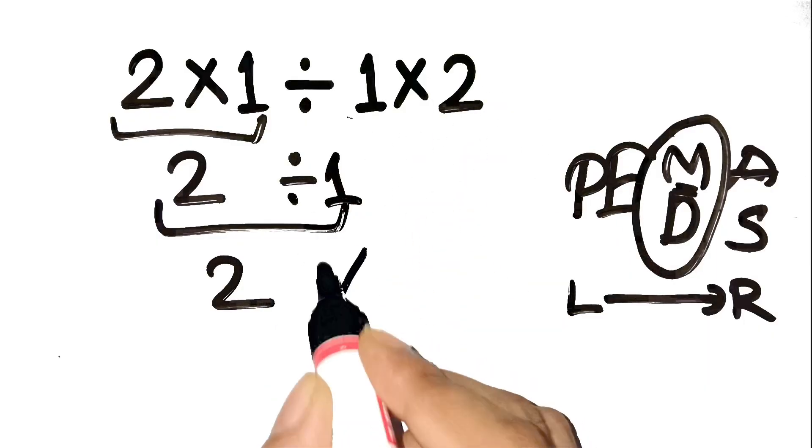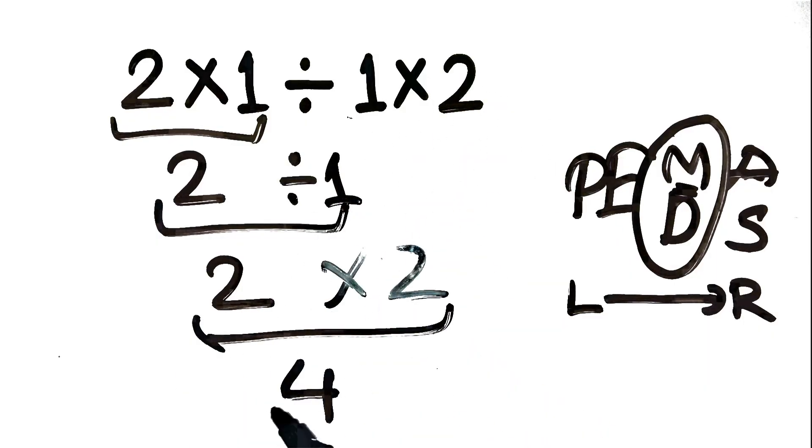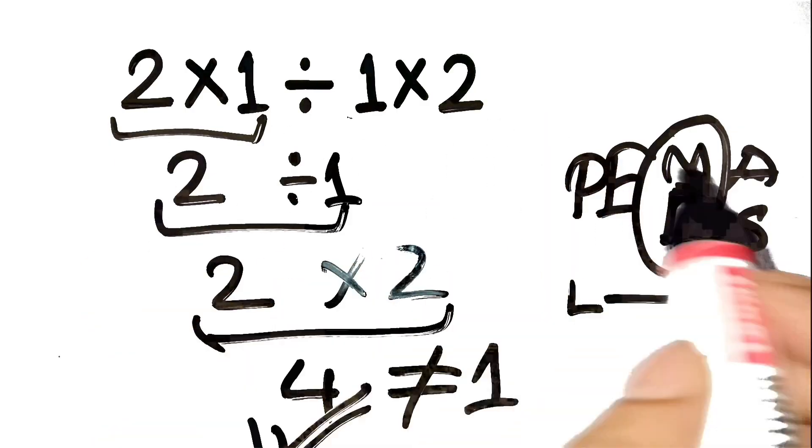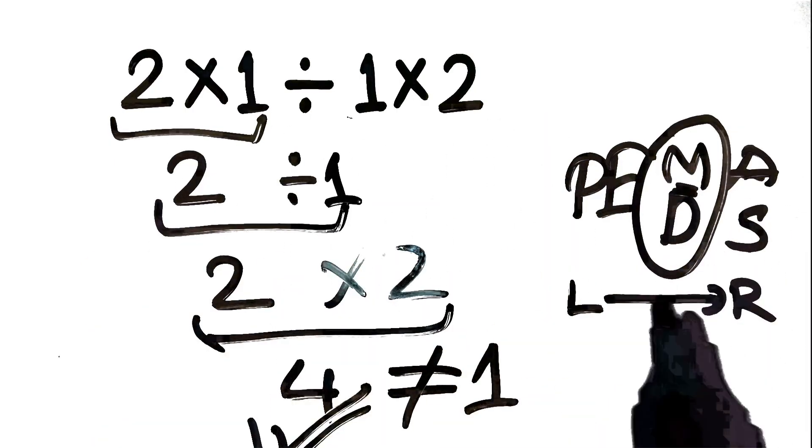Next, 2 times 2 equals 4. So the correct answer is 4, not 1. Crazy how that tiny left to right rule changes everything, right?